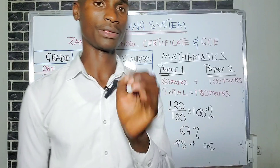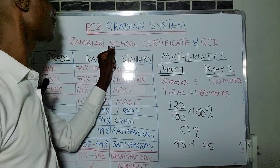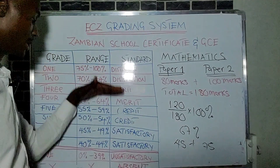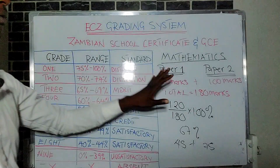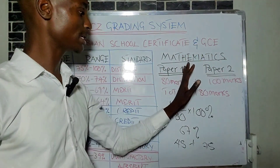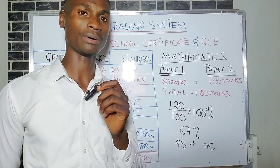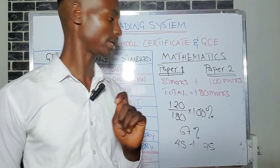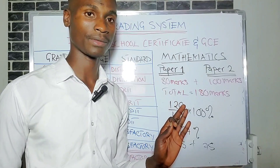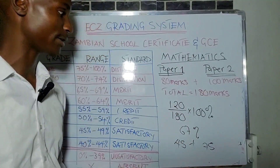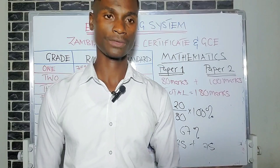To summarize: we've covered the ECZ grading system for the Zambian School Certificate and GCE, going from absent all the way up to Distinction 1. For mathematics, Paper 1 is out of 80 marks, Paper 2 is out of 100, giving a total of 180. The minimum marks needed for Distinction 1 is 135, and we've worked through examples to illustrate this. Thank you so much for watching.